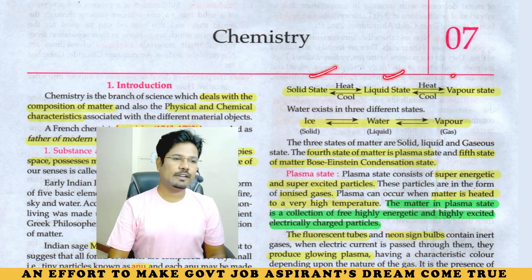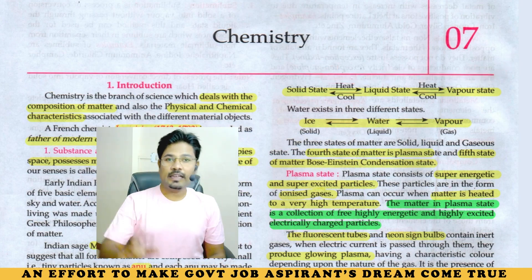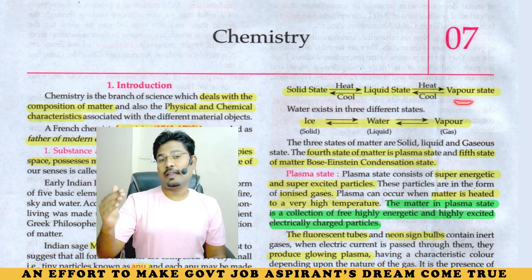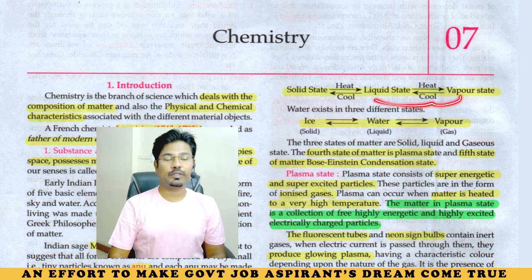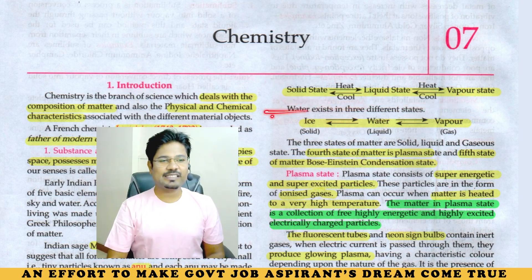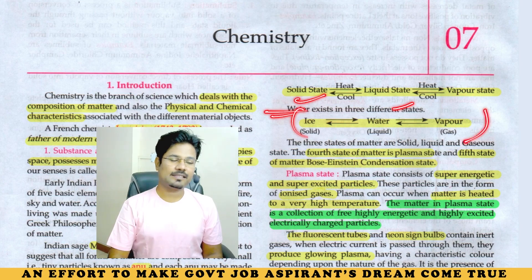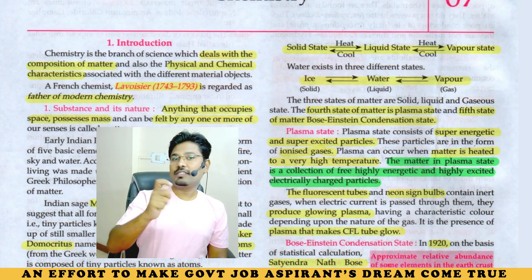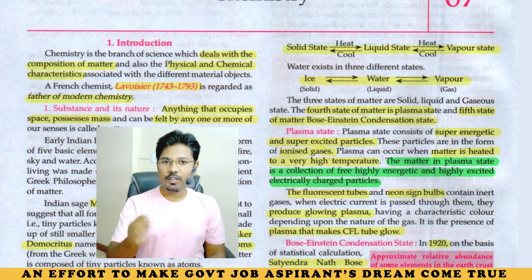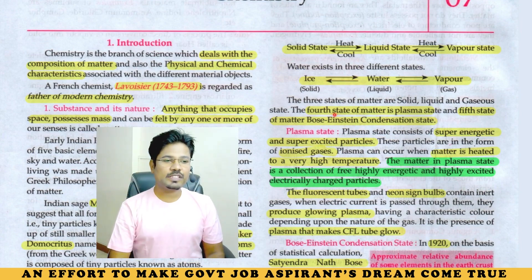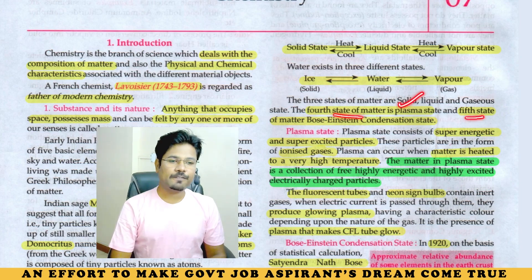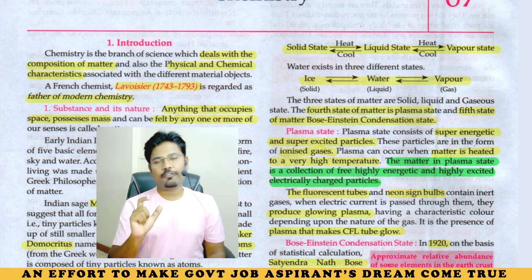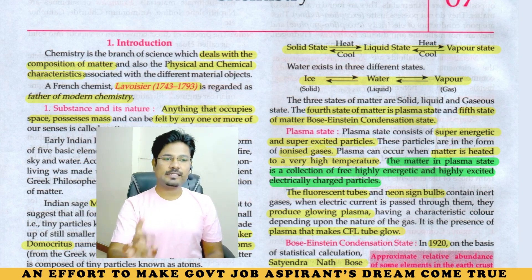Solid state, liquid state, and vapor state — heating a solid gives liquid, heating a liquid gives vapor or gaseous state. The reverse process is also possible. Water exists in all three states. There is also a fourth and fifth state of matter. The fourth state of matter is plasma; the fifth state of matter is Bose-Einstein condensation state.